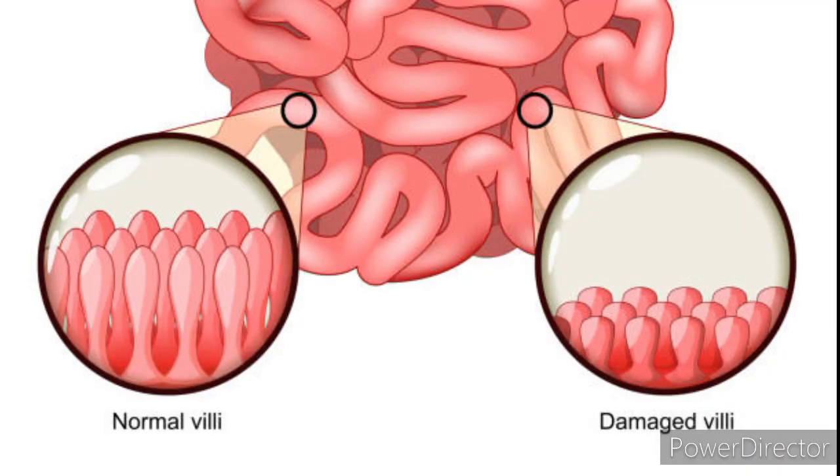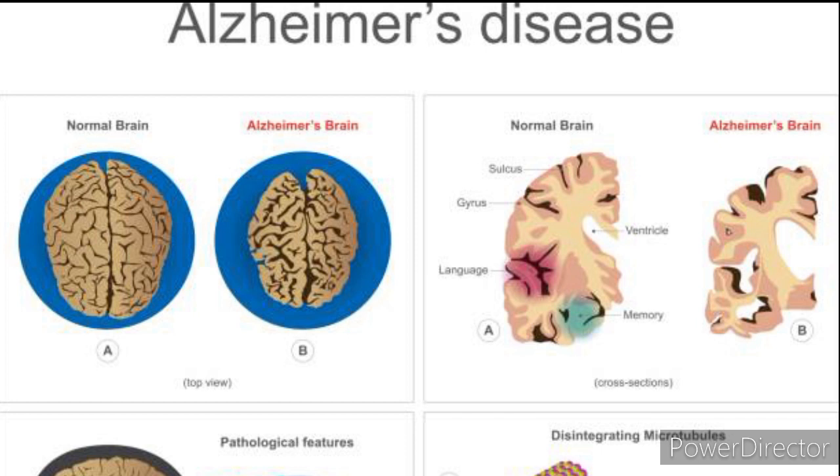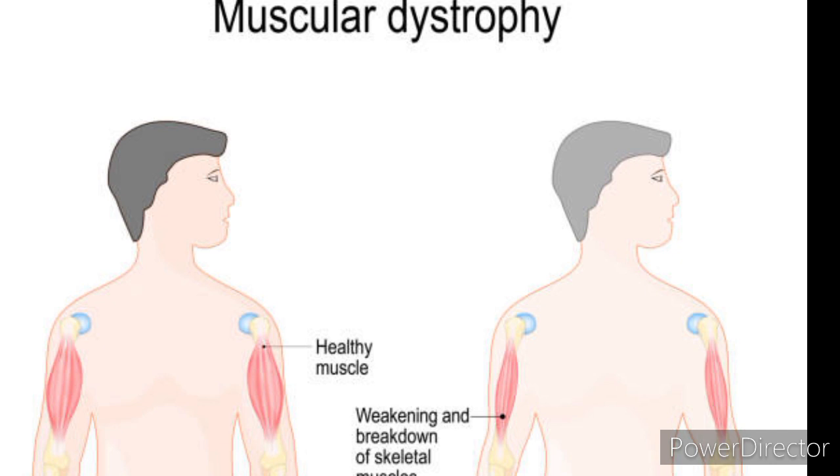Disease implications. Dysfunctions in the cytoskeleton can lead to various diseases. For example, abnormalities in actin or microtubule organization have been linked to disorders like muscular dystrophy,